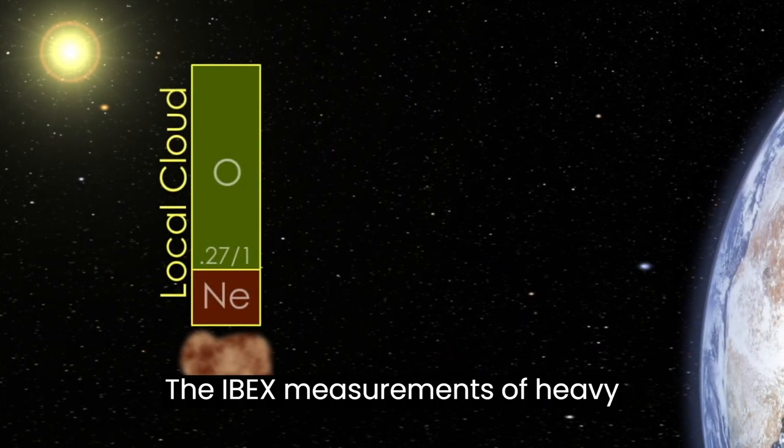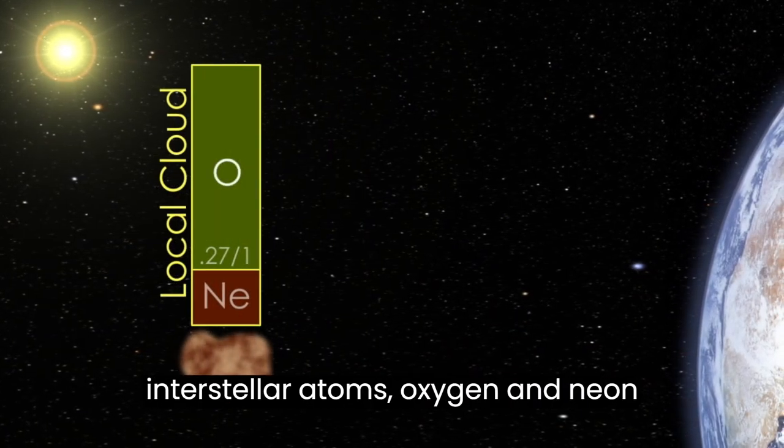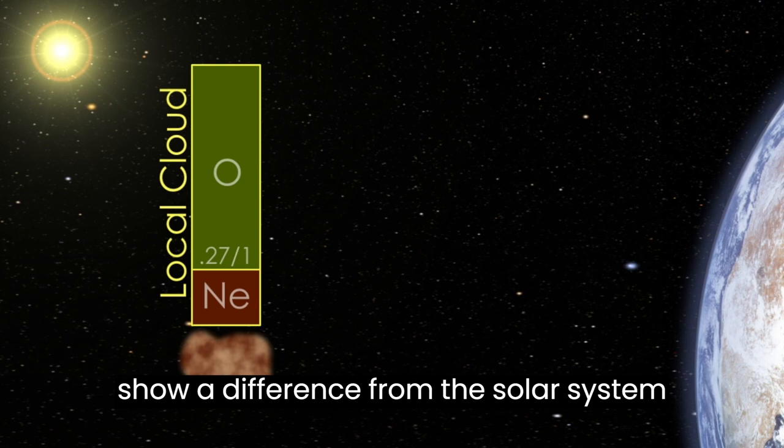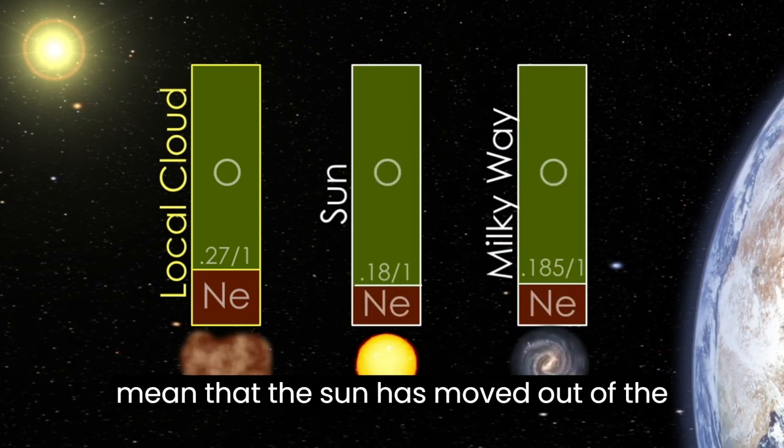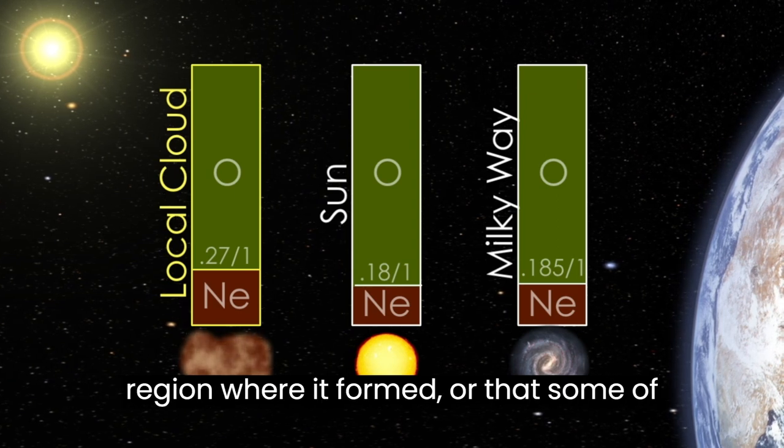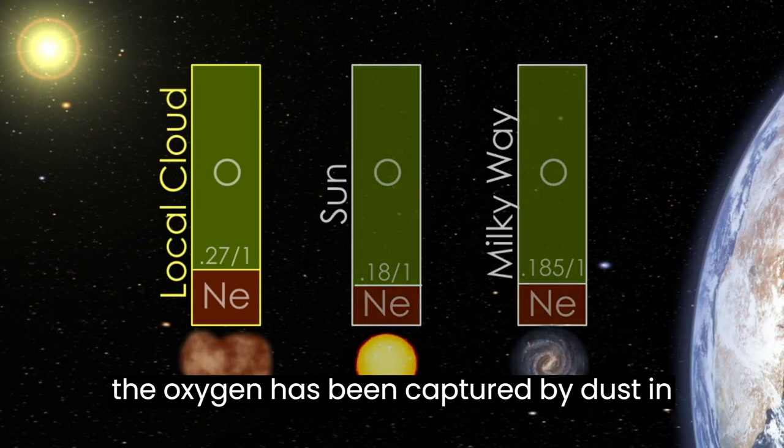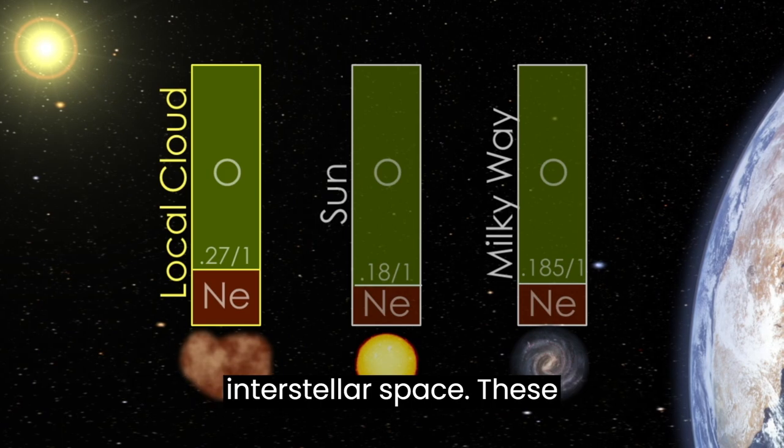The IBEX measurements of heavy interstellar atoms, oxygen and neon, show a difference from the solar system and galaxy as a whole. This puzzle may mean that the Sun has moved out of the region where it formed, or that some of the oxygen has been captured by dust in interstellar space.